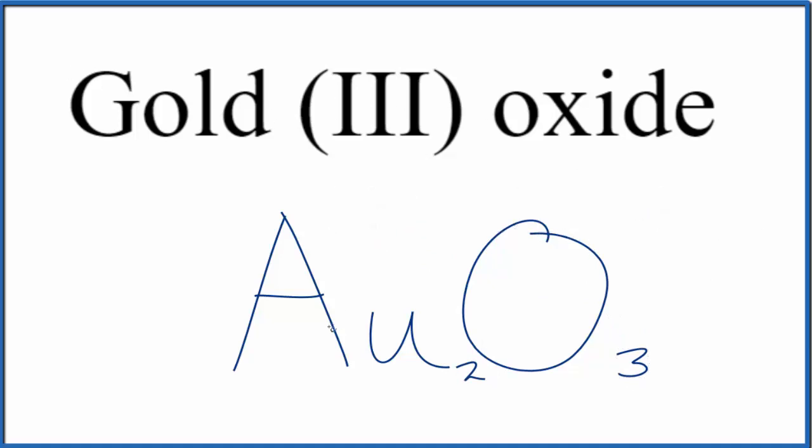So let's look at that again, let's check our work. We said gold, because of the Roman numeral, that's 3+. Oxygen is always 2-. Three times 2-, that's 6-. Two times 3+, that's 6+.